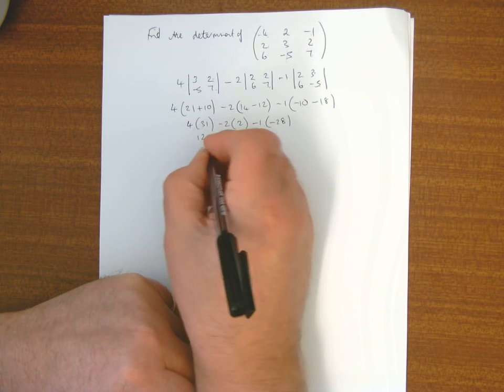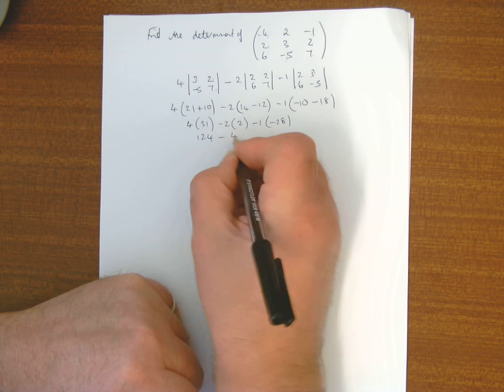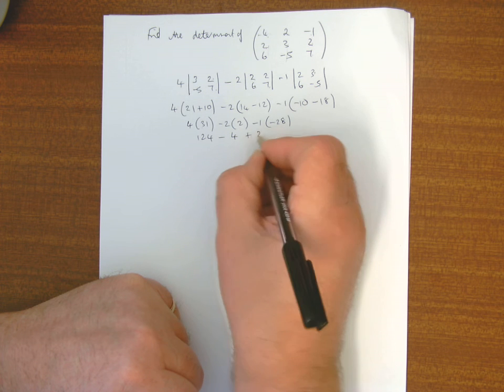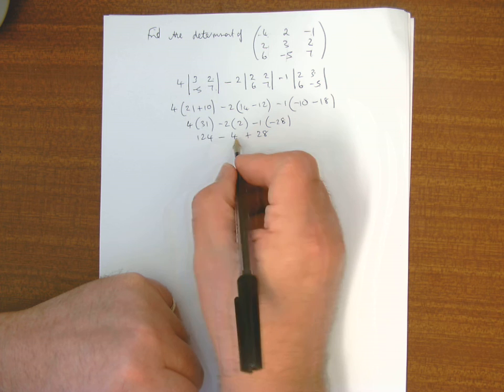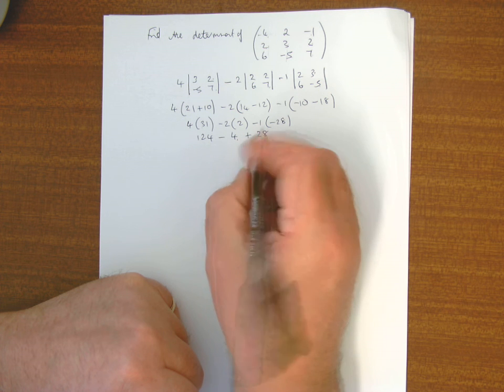So 4 times 31, that's 124, take away 4, add 28, that's 120, 148.